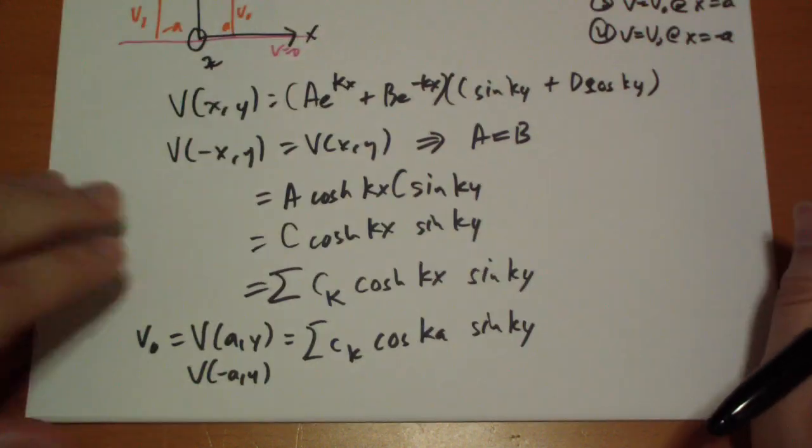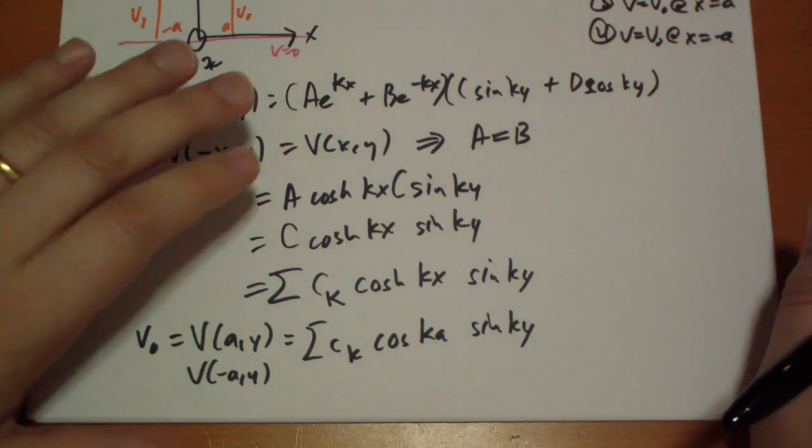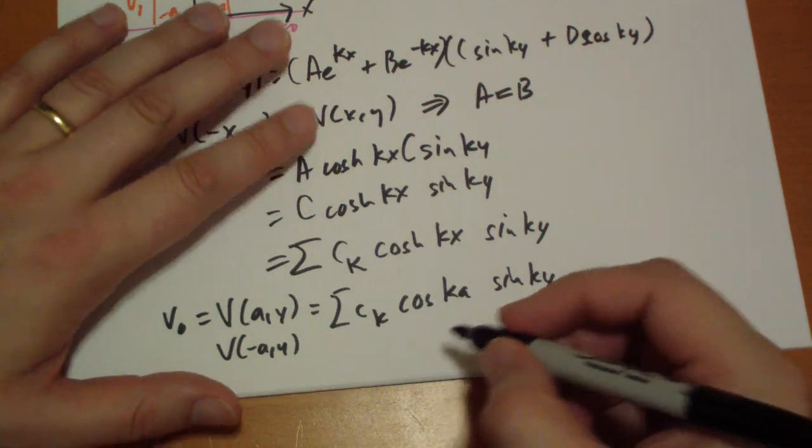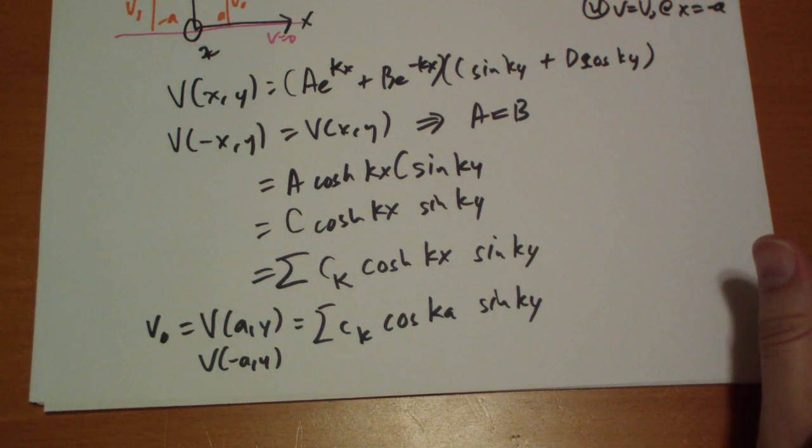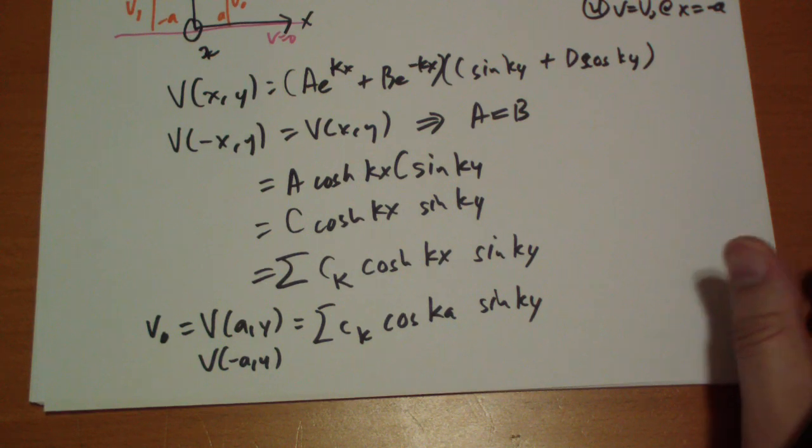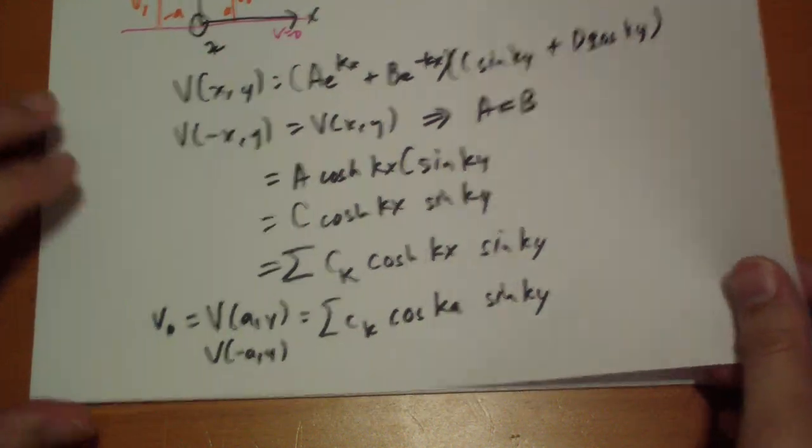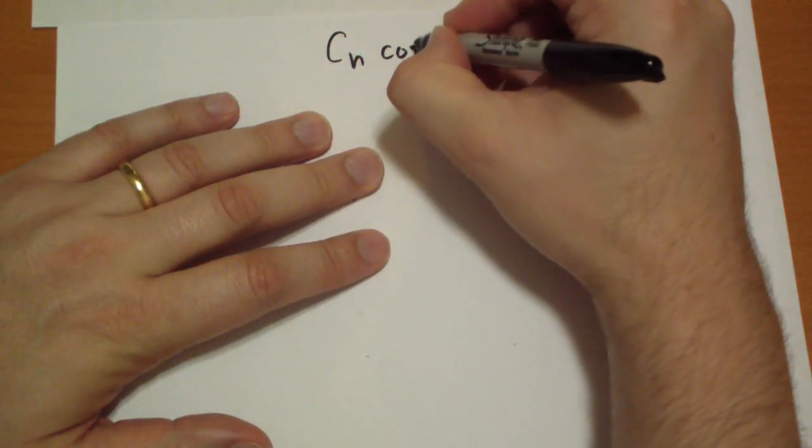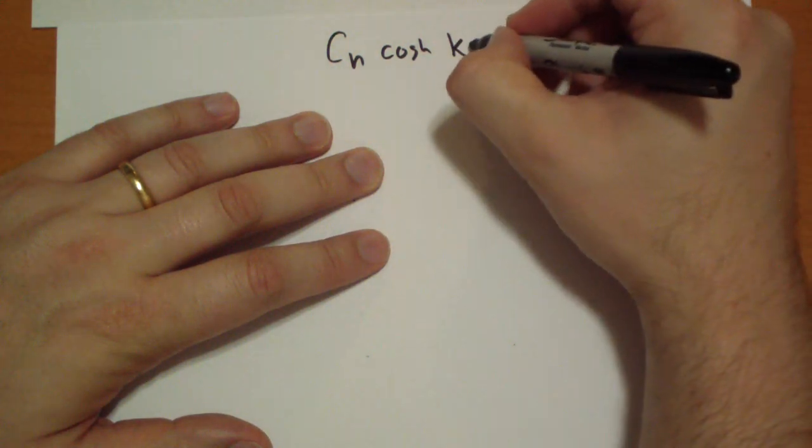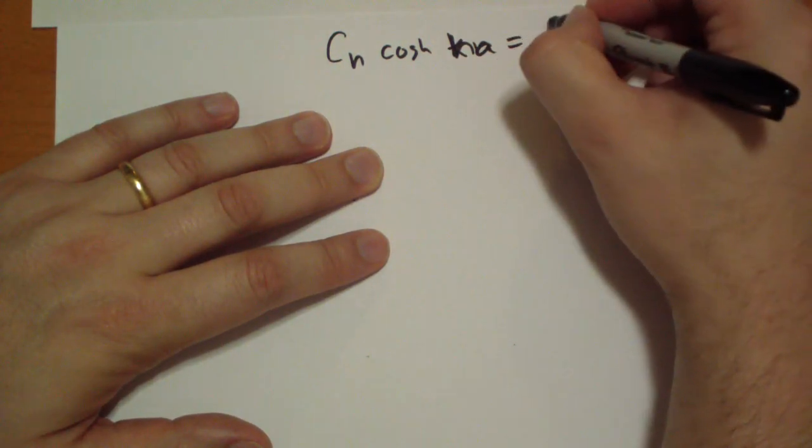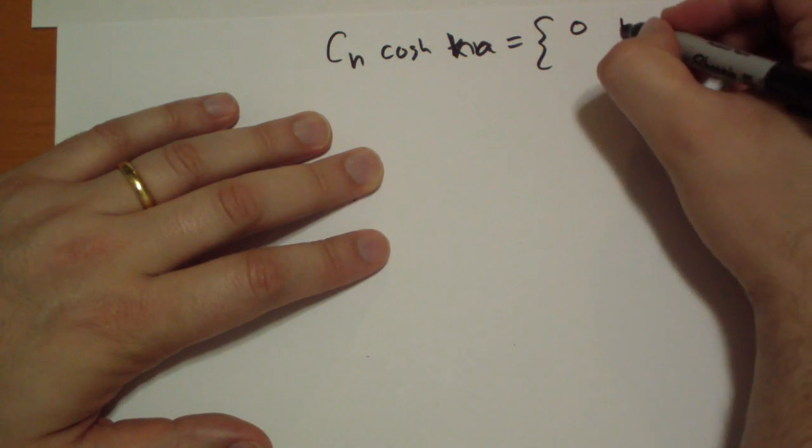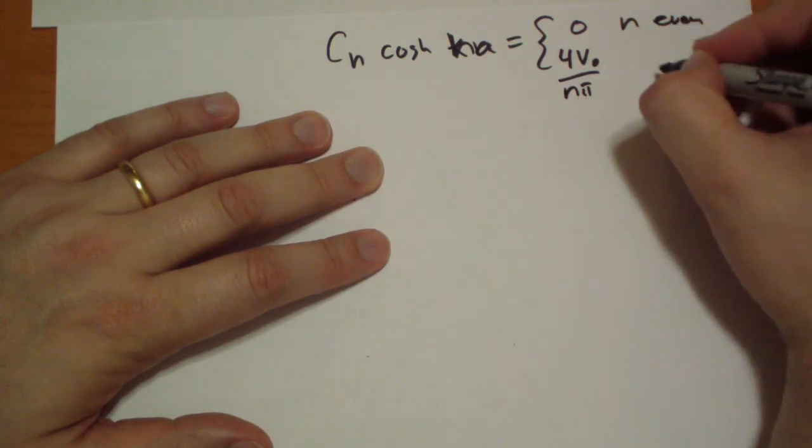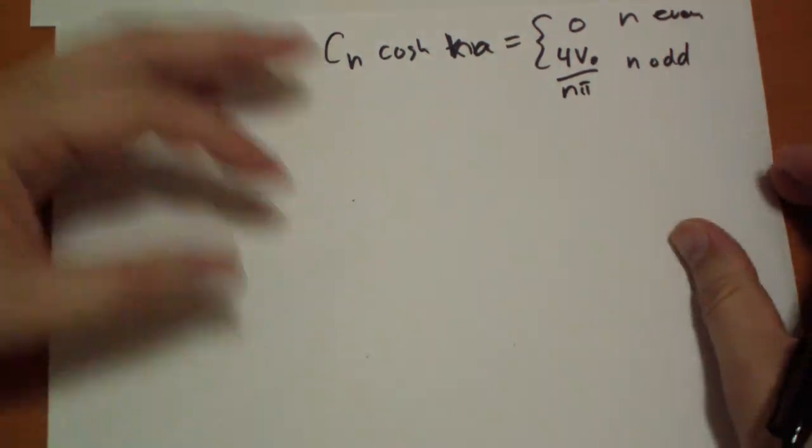And when we plug in and do the integral, then we're going to get the same results as last time, one more time. So, should I use a new piece of paper? I'm almost done? Yeah, I'm almost done. Okay. New piece of paper. So, c n is going to be equal to zero when n is even. And it's going to be equal to four v-naught over n pi when n is odd. Okay. Just stealing the answers. I'm not going to go through the math, because I didn't even go through the math in the first place.